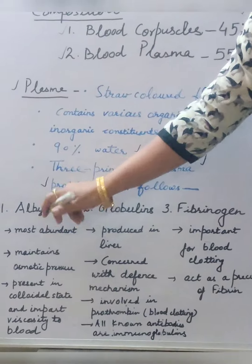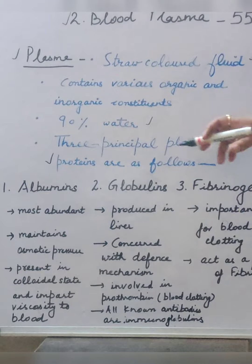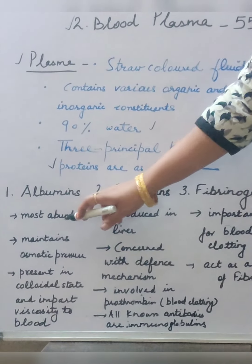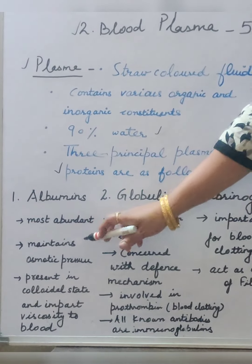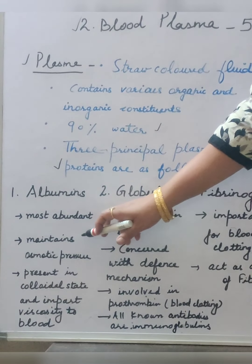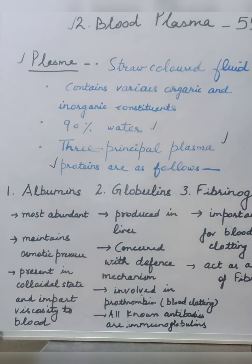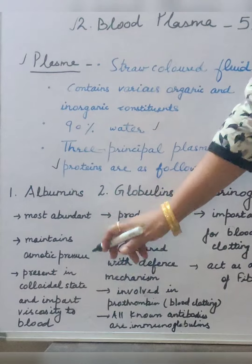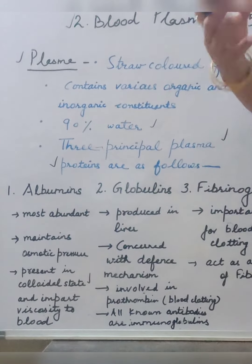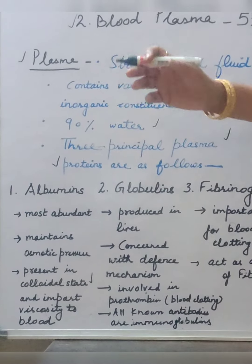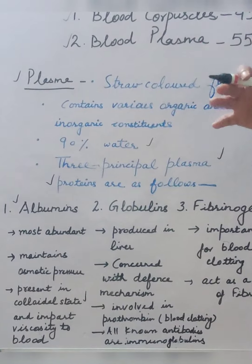The three important proteins present in plasma are albumins, globulins, and fibrinogen. First, albumins — these are the most abundant proteins in blood. They maintain the blood's osmotic pressure, are responsible for blood's colloidal state, and are also the reason behind blood's viscosity. It is a very important protein.